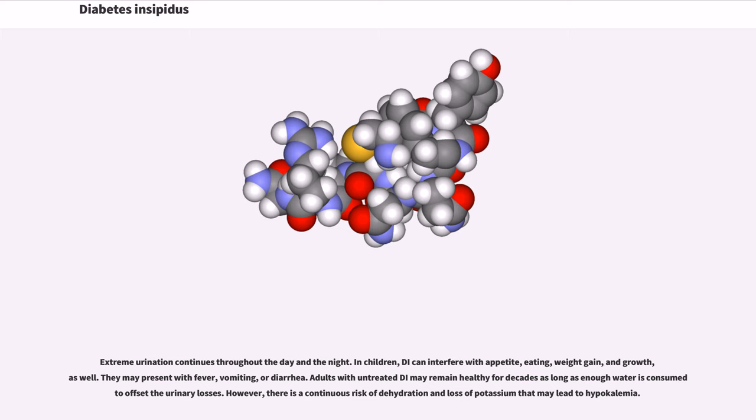In children, DI can interfere with appetite, eating, weight gain, and growth as well. They may present with fever, vomiting, or diarrhea. Adults with untreated DI may remain healthy for decades as long as enough water is consumed to offset the urinary losses.